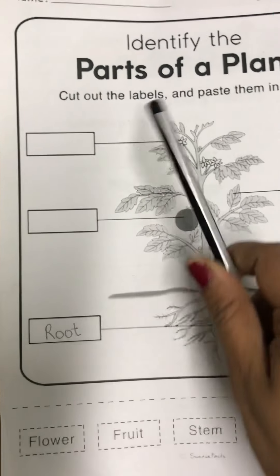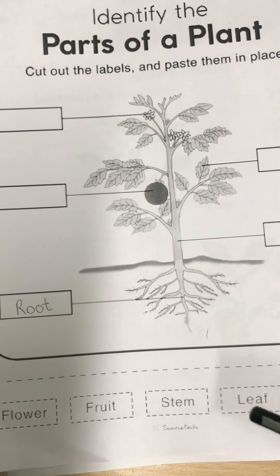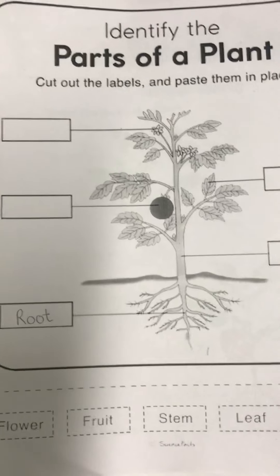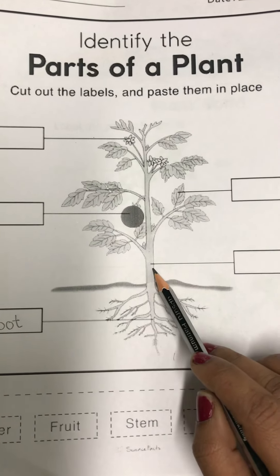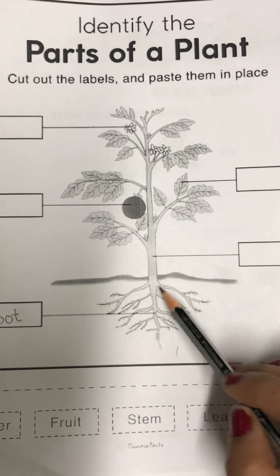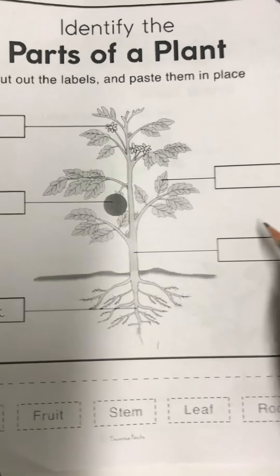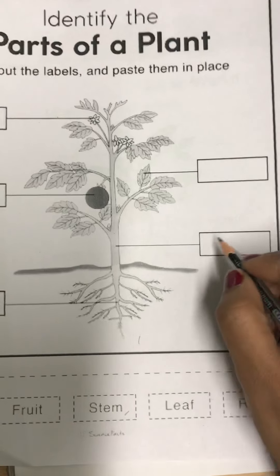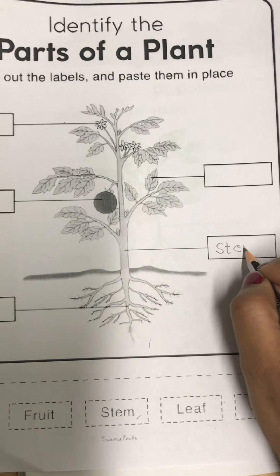You can cut the labels and paste them, but it is better if you write down the spellings. This is the root which is below the ground. Now, this is the stem — the stem helps the plant to stand upright and carries water and minerals from roots to other parts of the plant. Write down: stem.